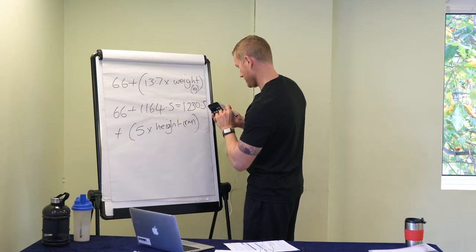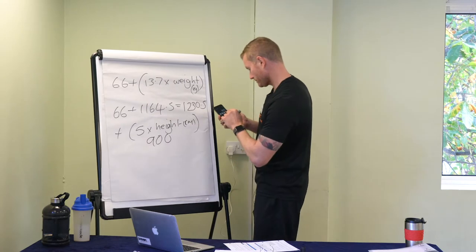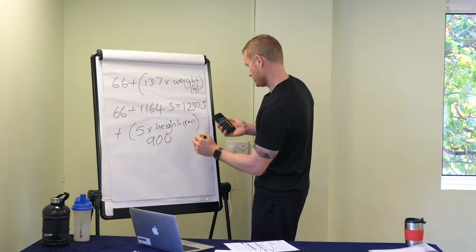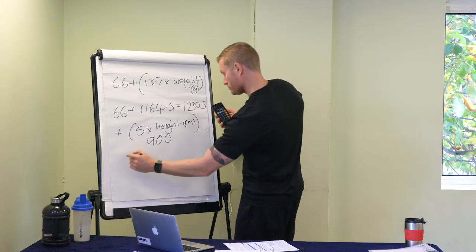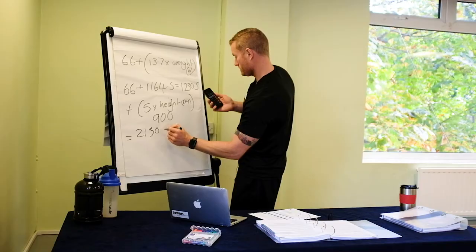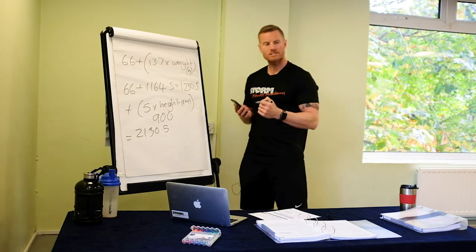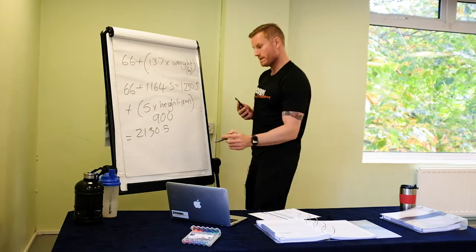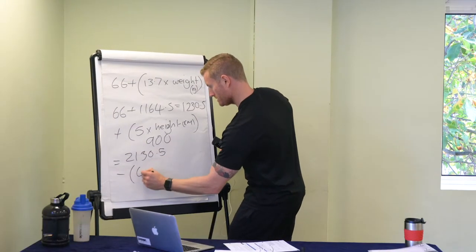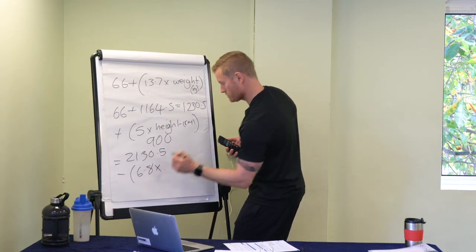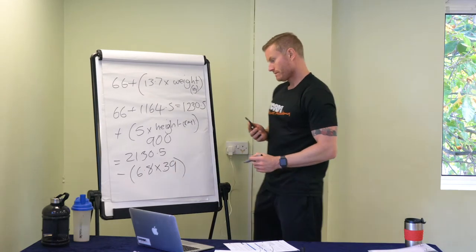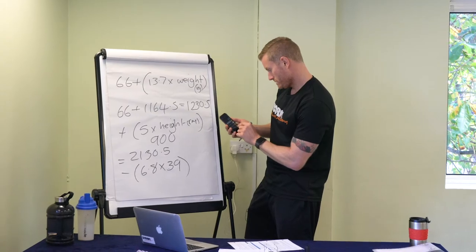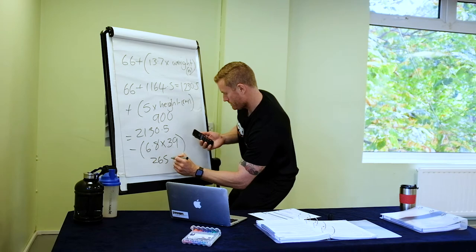Five times 180 is 900. Adding that to 1230.5 gives 2130.5. You're thinking that's still not 1800 calories — well that's because I'm not done yet. Now I have to minus 6.8 times my age, which is currently 39. So 6.8 times 39 equals 265.2.